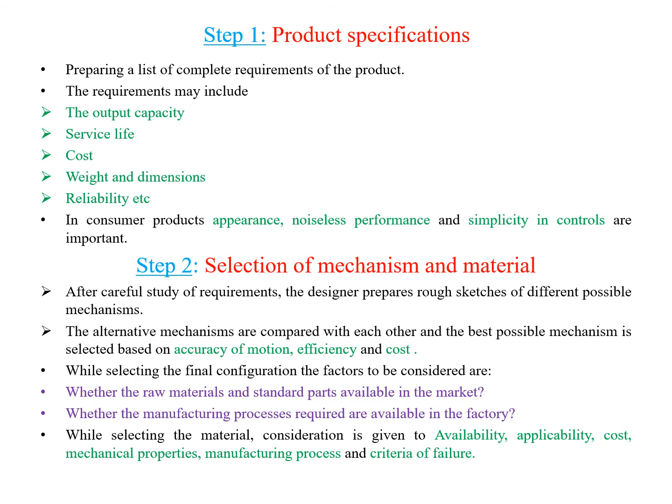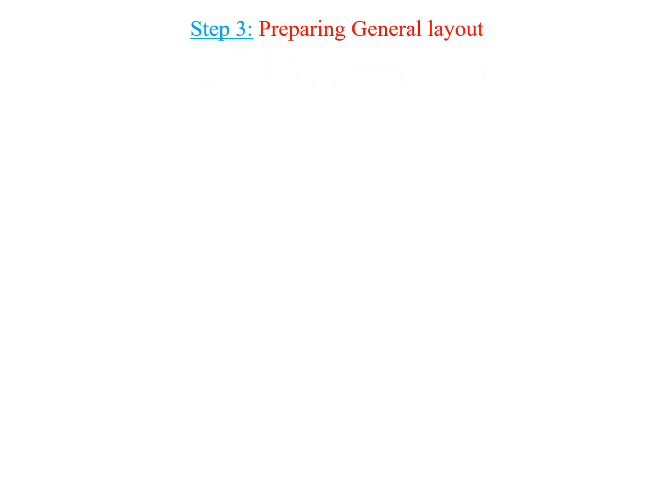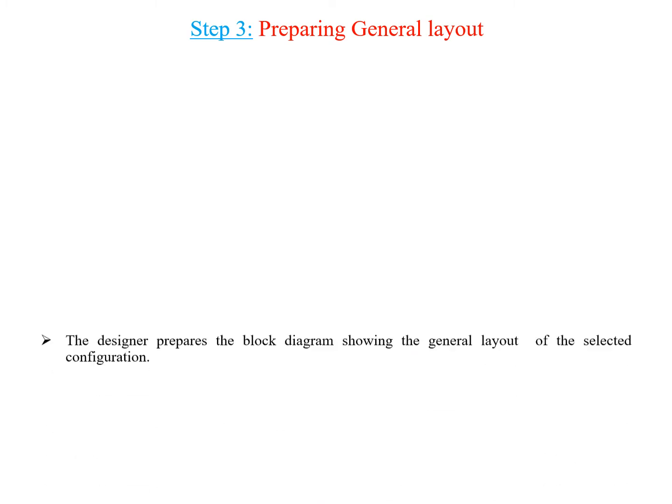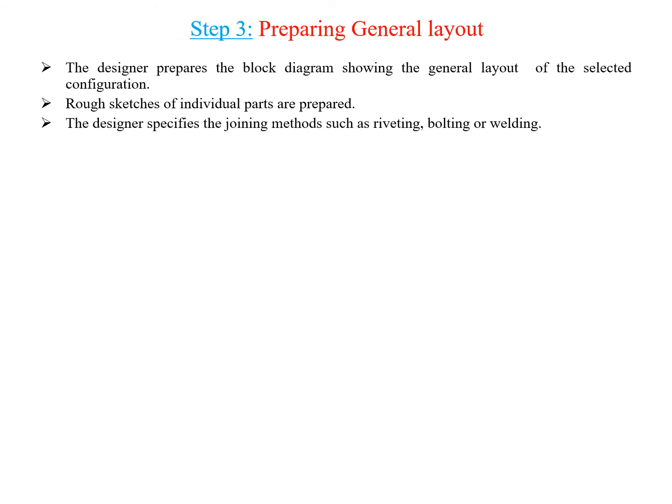Step three is preparing the general layout. The designer prepares a block diagram showing the general layout of the selected configuration, and rough sketches of individual parts are prepared.